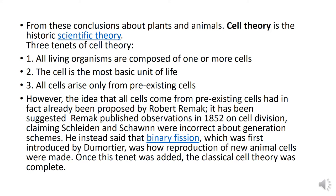However, the idea that all cells come from pre-existing cells had already been proposed by Robert Remak. It has been suggested that Remak published observations in 1852 on cell division, claiming that Schleiden and Schwann were incorrect about their generation scheme.